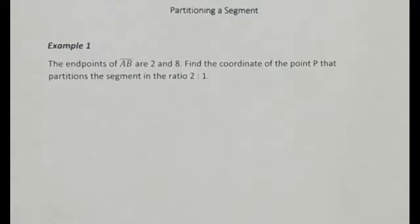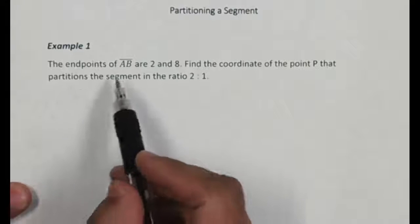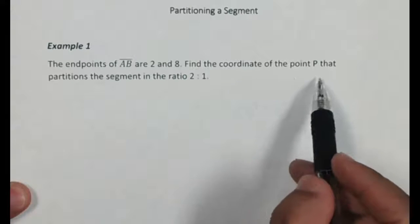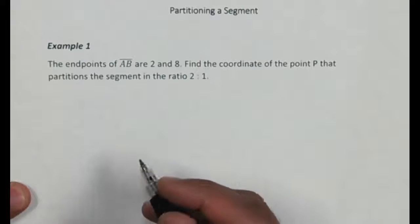All right, this video is about partitioning a segment, and you'll have problems that look like this example here. It says the endpoints of segment AB are at 2 and 8, and you want to find the coordinate of the point P that partitions the segment in the ratio 2 to 1.